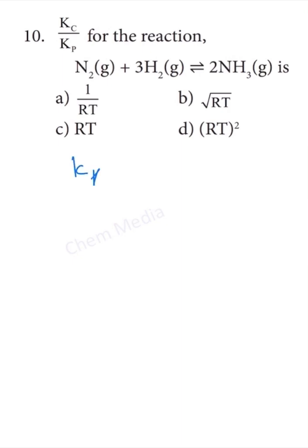We know that Kp equals Kc times RT to the power of delta Ng. Delta Ng is the difference in the number of moles of products and the number of moles of reactants.